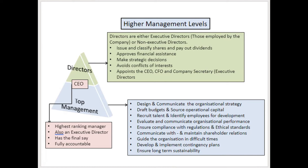Directors are the ones who issue and classify shares and pay out dividends. They approve financial assistance, make strategic decisions, and avoid conflicts of interest — especially if they are part of more than one company directorship. They are the ones who appoint the executive directors: the CEO (Chief Executive Officer), the CFO (Chief Financial Officer), and sometimes the COO (Chief Operational Officer), as well as the company secretary.